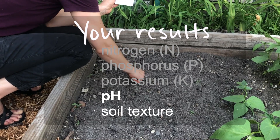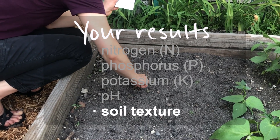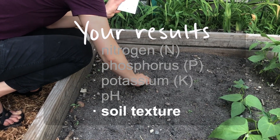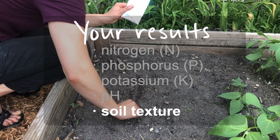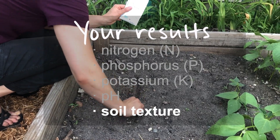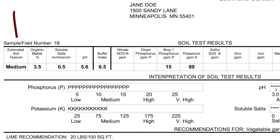Finally, let's talk about soil texture. We refer to soil texture as being coarse, medium, or fine. A coarse soil will likely be more sandy, a medium soil is going to be more loamy, and a fine soil will have more clay in it.